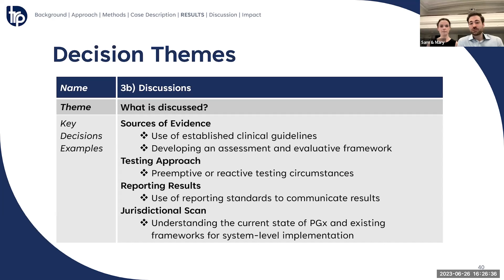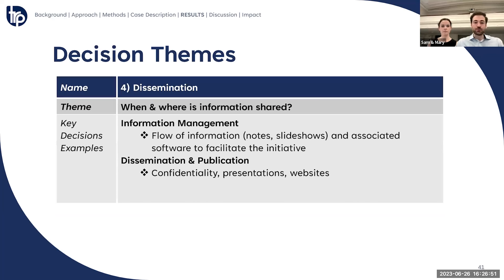With all the scientific discussion, deciding the sources of evidence and established clinical guidelines to use was a key component. Looking at preemptive or reactive testing circumstances also garnered lots of discussion, along with deciding whether to use existing lab reporting standards. Jurisdictional scans were also important to continuously monitor the current state of pharmacogenomics in the province for new clinical evidence, or even other system-level guidance from other jurisdictions on how to implement these tests in a health system. Figuring out how to manage the information and where it will be shared was also an important consideration, such as the flow of information in meeting minutes, slide decks, and which software to use, and also deciding how to disseminate the recommendations while maintaining confidentiality until receiving appropriate approvals to share publicly.